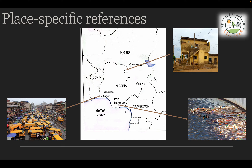To get that Level 3, you must use place-specific detail. It's generally effective to use a range of different places from different parts of the country. Some examples you could use are Port Harcourt in the south, where the issue is water pollution. You could also talk about Lagos, the largest city in Nigeria in the southwest of the country, where the issue is traffic congestion. You could also talk about Kano in the north, where the issue is poor housing provision.